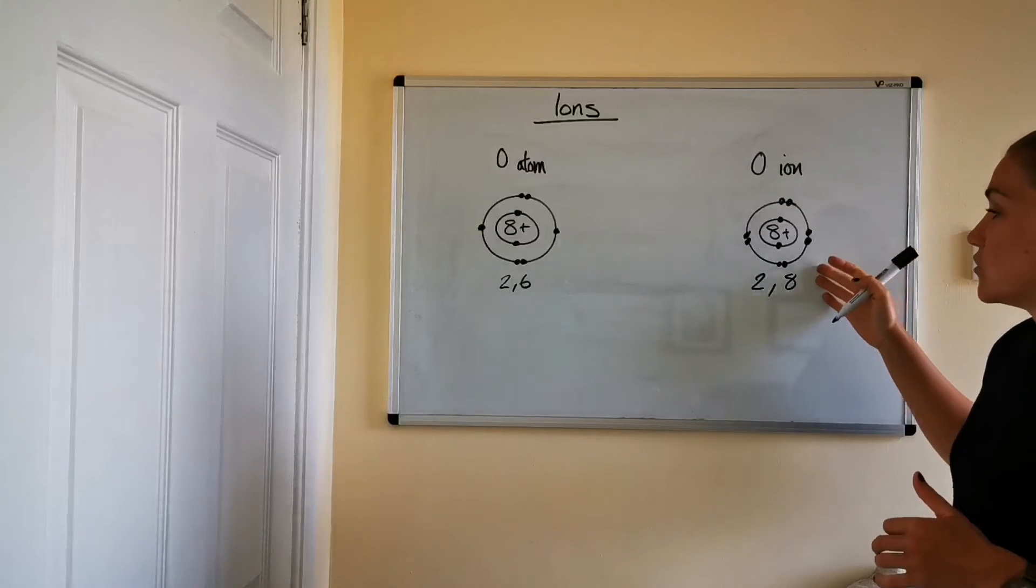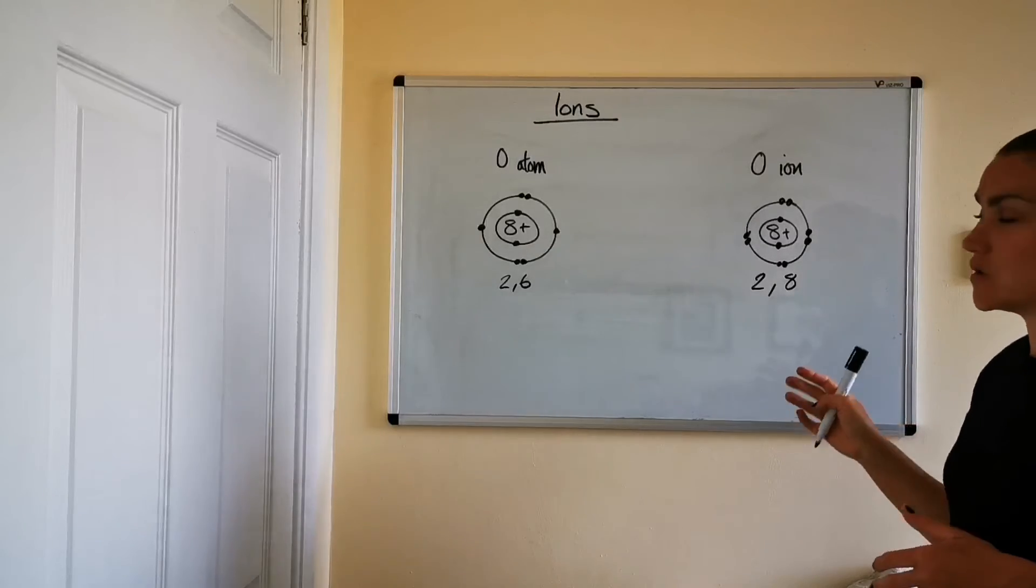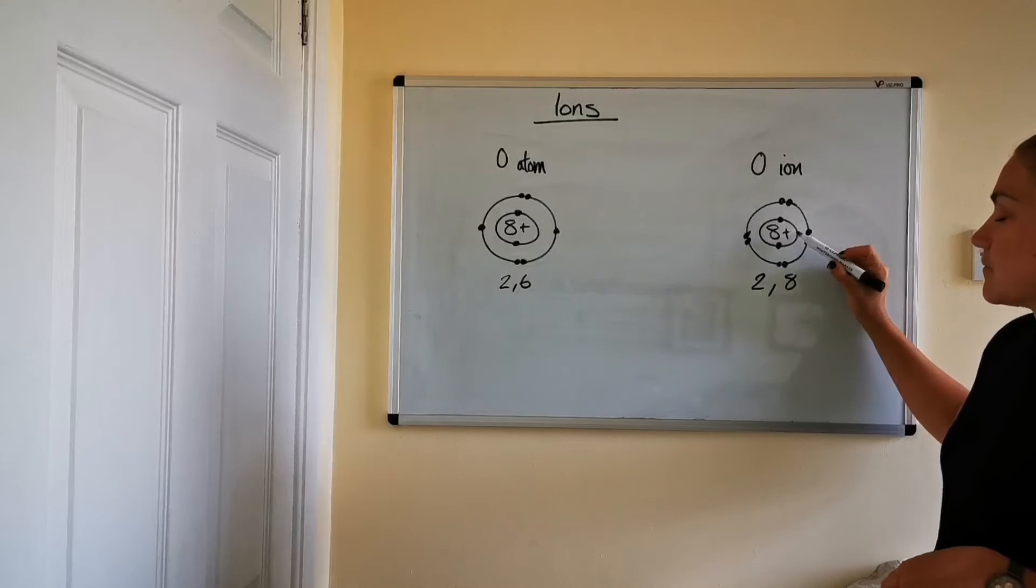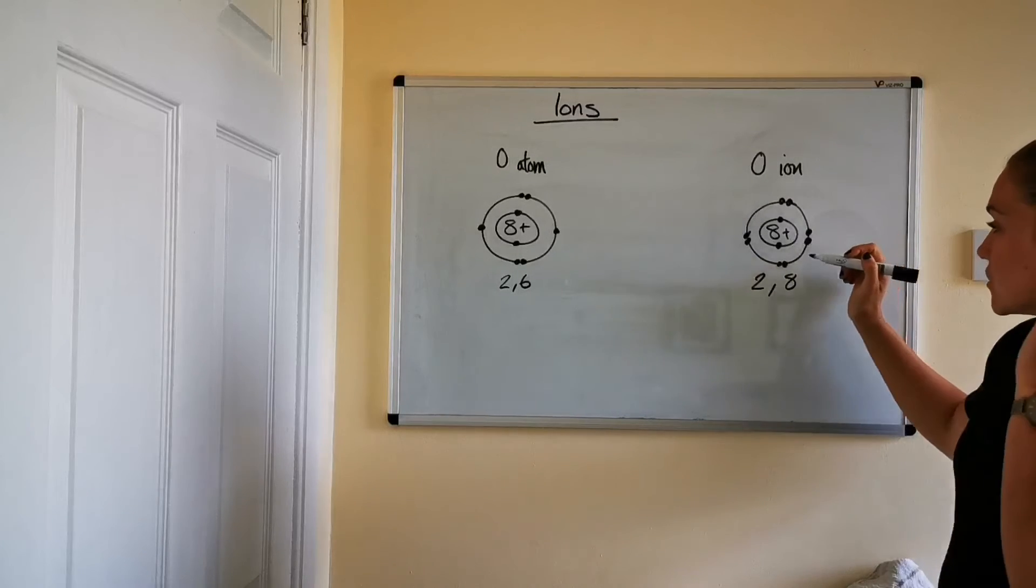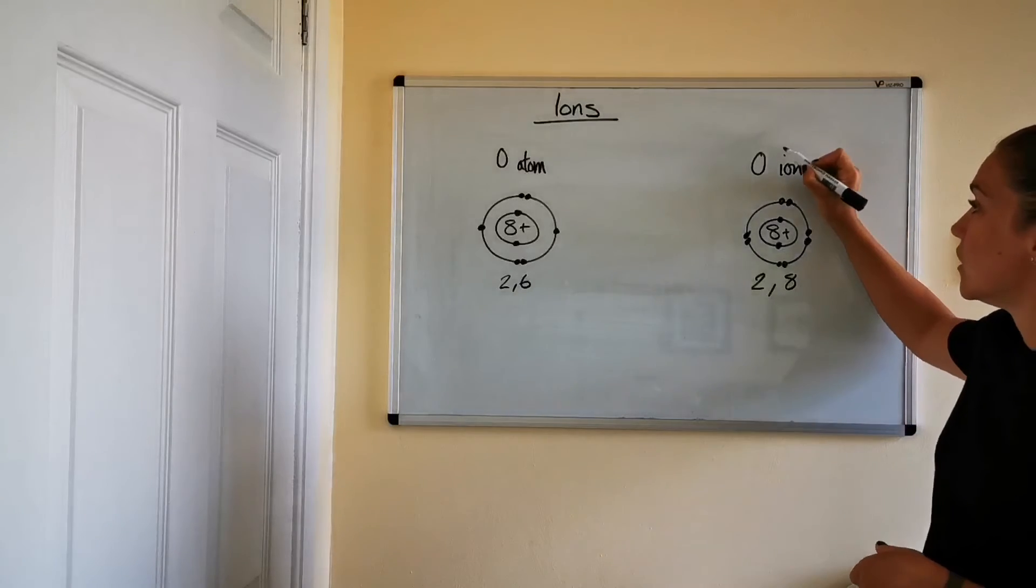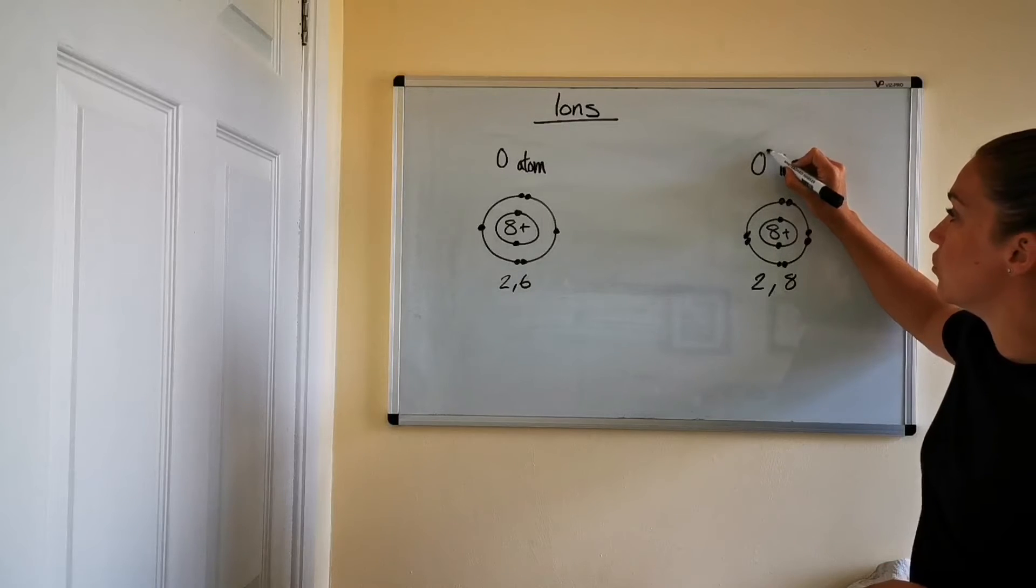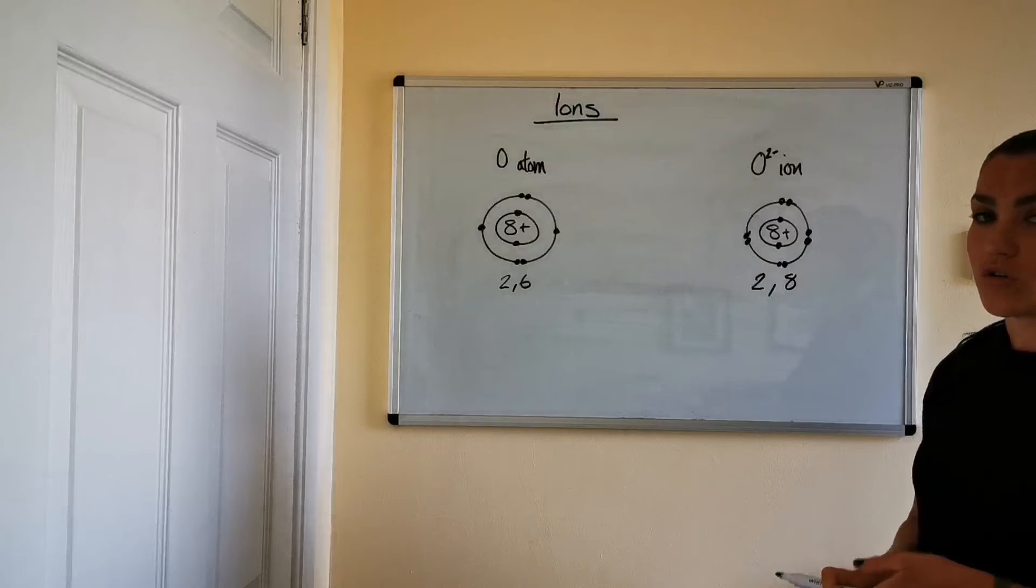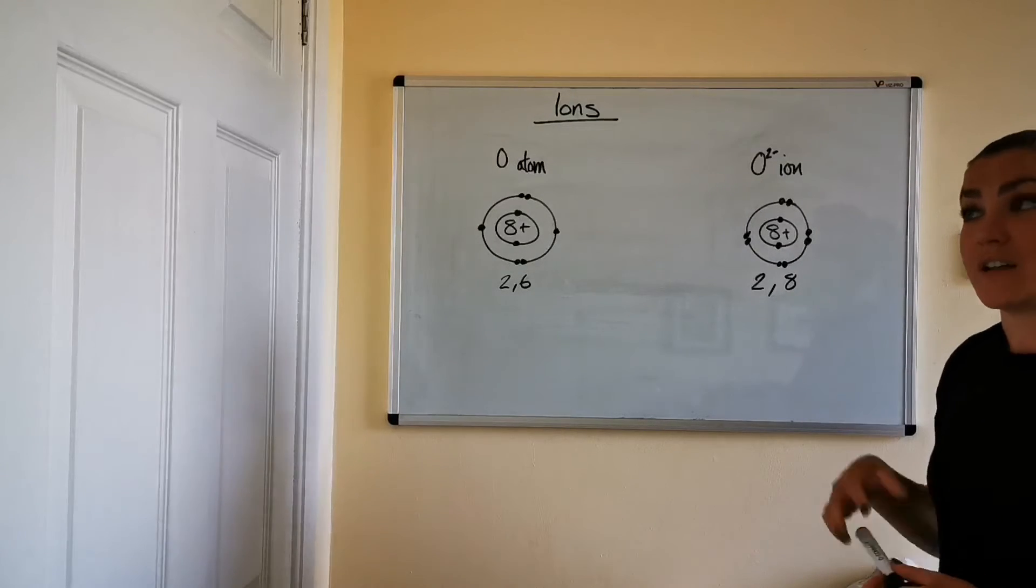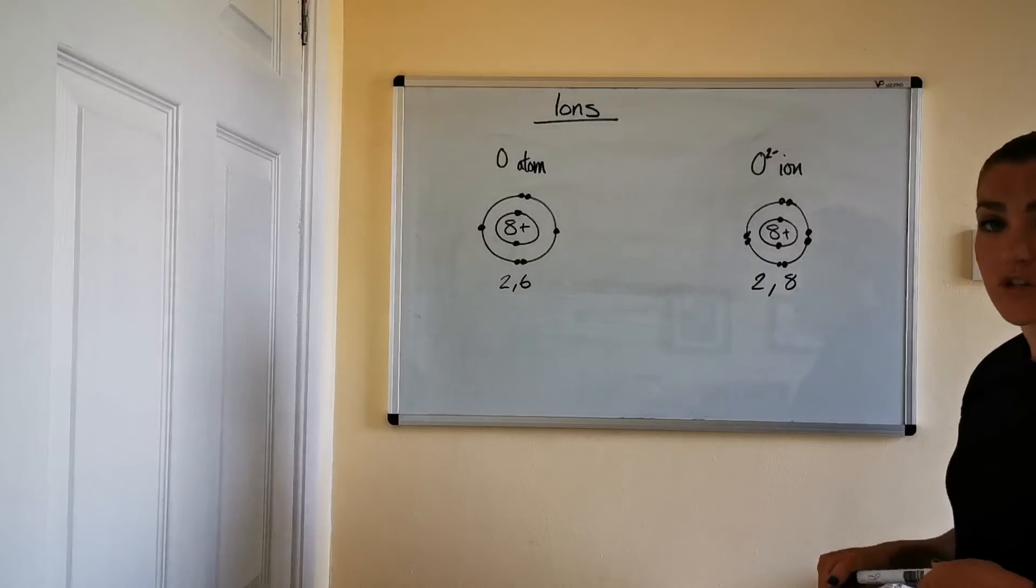Again though we now don't have a neutral species anymore. It's not a neutral atom because we don't have the same number of protons and electrons so the charges don't cancel each other out. So we've got 10 negative charges and eight positive charges which means that we have a net charge of two negative. So if we were writing the chemical symbol for the oxygen ion we'd be writing O2 negative. And oxygen always becomes a two negative ion. It can't become an ion with any other charge because if it has a different charge it's not going to be stable because the only charge that gives it stability is a two negative charge.